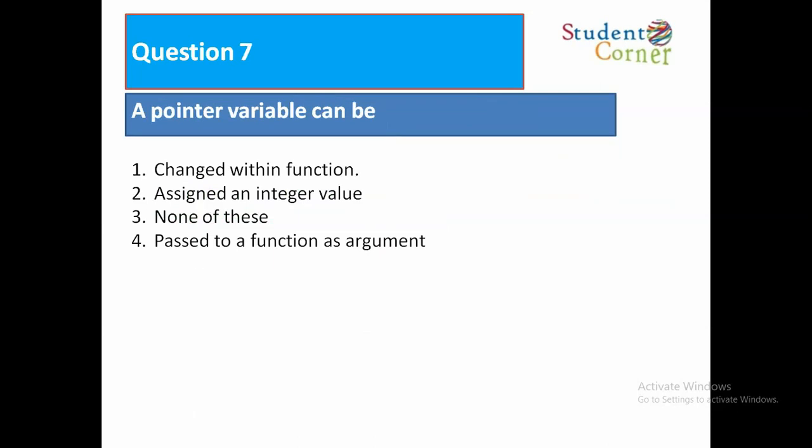Question number 7: A pointer variable can be: Option 1, changed within function. Option 2, assigned an integer value. Option 3, none of these. Option 4, passed to a function as an argument. The answer is passed to a function as an argument.